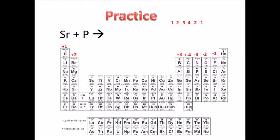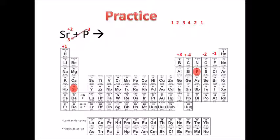Next: strontium and phosphorus. Strontium is atomic number 38, in group two, so its oxidation number is plus two. Phosphorus has an oxidation number of negative three. We drop the signs and cross the numbers: three becomes the subscript for strontium, and two becomes the subscript for phosphorus. That gives us Sr₃P₂ — that's our product.